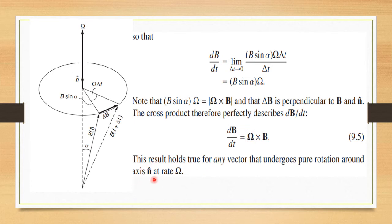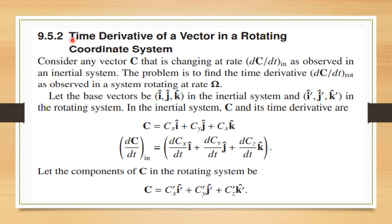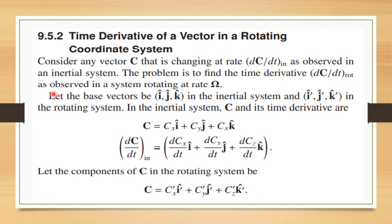We can take this as an operator relation. Now we find the time derivative of a vector in a rotating coordinate system. We consider a vector c and find its time derivative. The rate of change in an inertial frame is dc/dt as observed in the inertial system, and we need to find the time derivative in the rotational frame where the system rotates at rate omega.